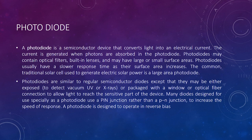The photodiode is a semiconductor device that converts light into electrical current. The current is generated when photons are absorbed in the photodiode. Photodiodes may contain optical filters, built-in lenses, and may have large or small surface areas. Photodiodes usually have a slower response time as their surface area increases. The common traditional solar cell used to generate electrical solar power is a large area photodiode.